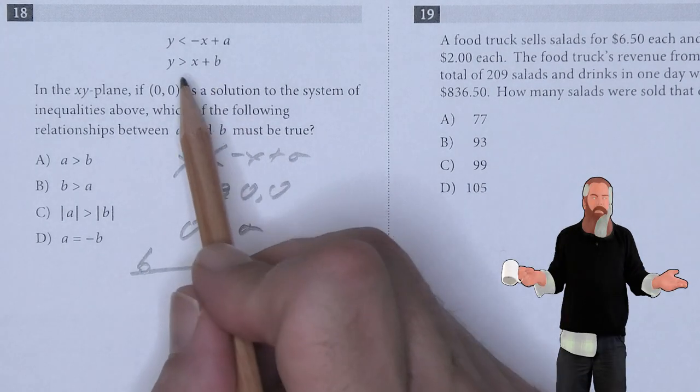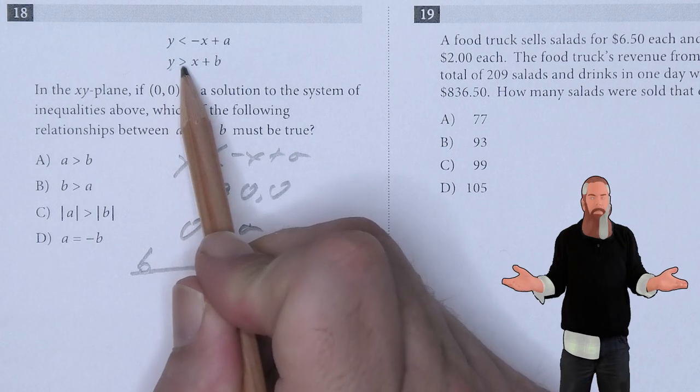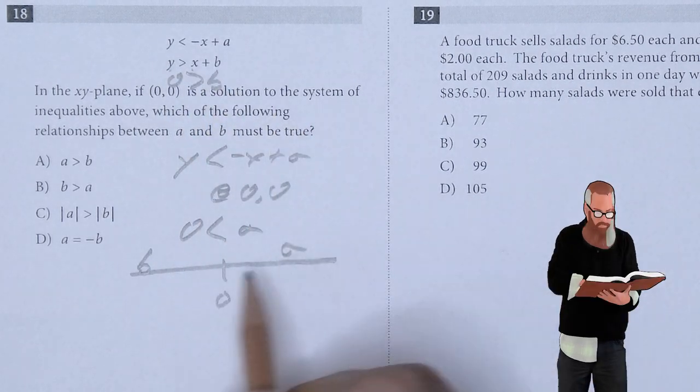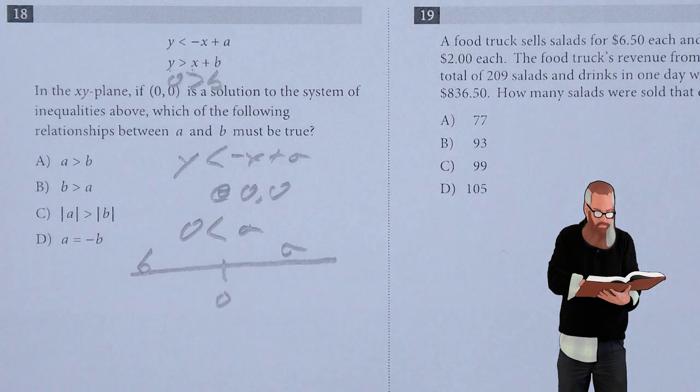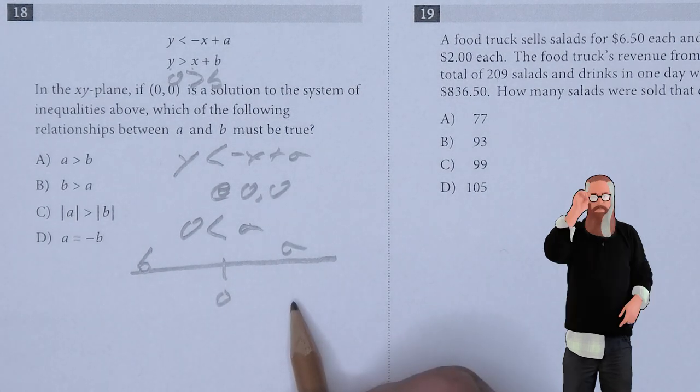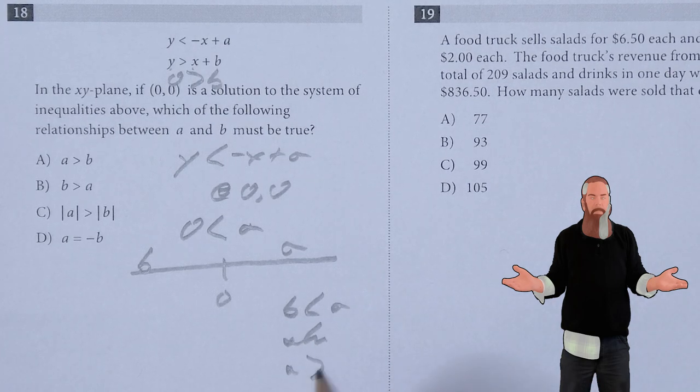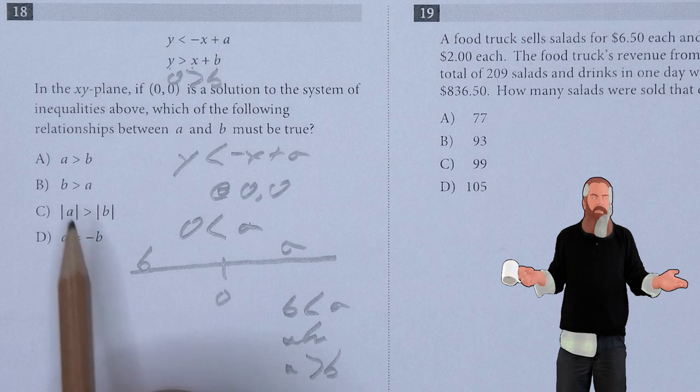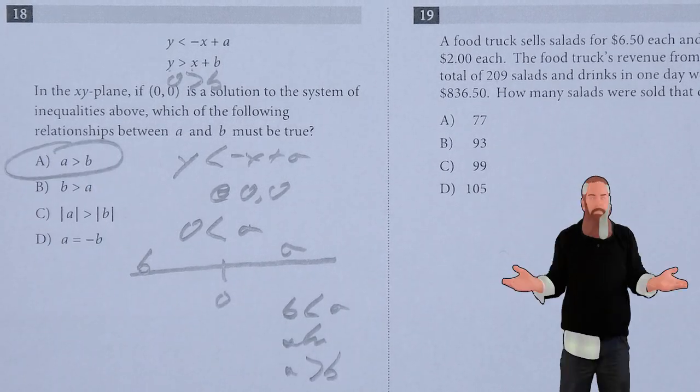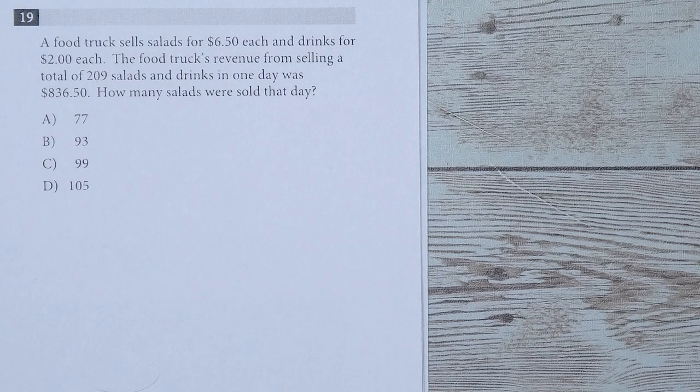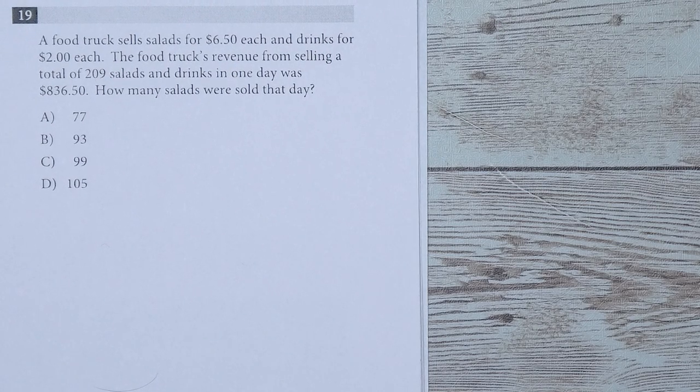Yes, it is on the left, because if we look here, (0,0) would give us 0 is greater than b. So we have a b, a 0, and an a. So what we know is that b is less than a. We also know that a is greater than b, which means that A is the answer.